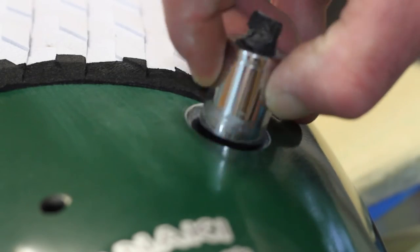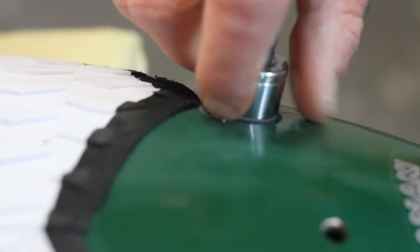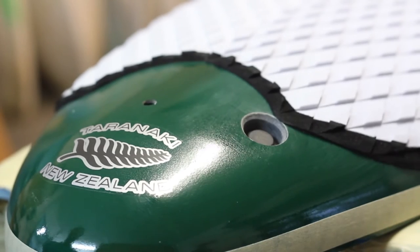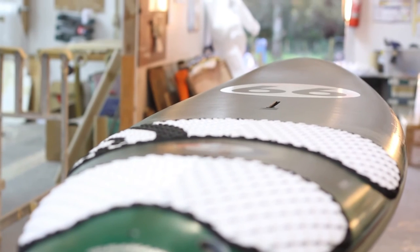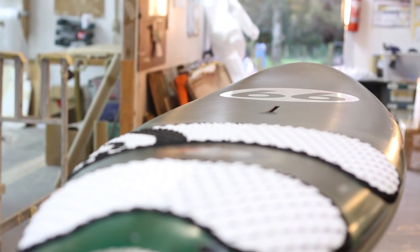So then we install the Gore-Tex vent plug. It screws into an insert that's already been built into the board previously. Gore-Tex vent plug is great because it lets the board basically vent and equalize continually and not just when you actually undo or do up a screw.